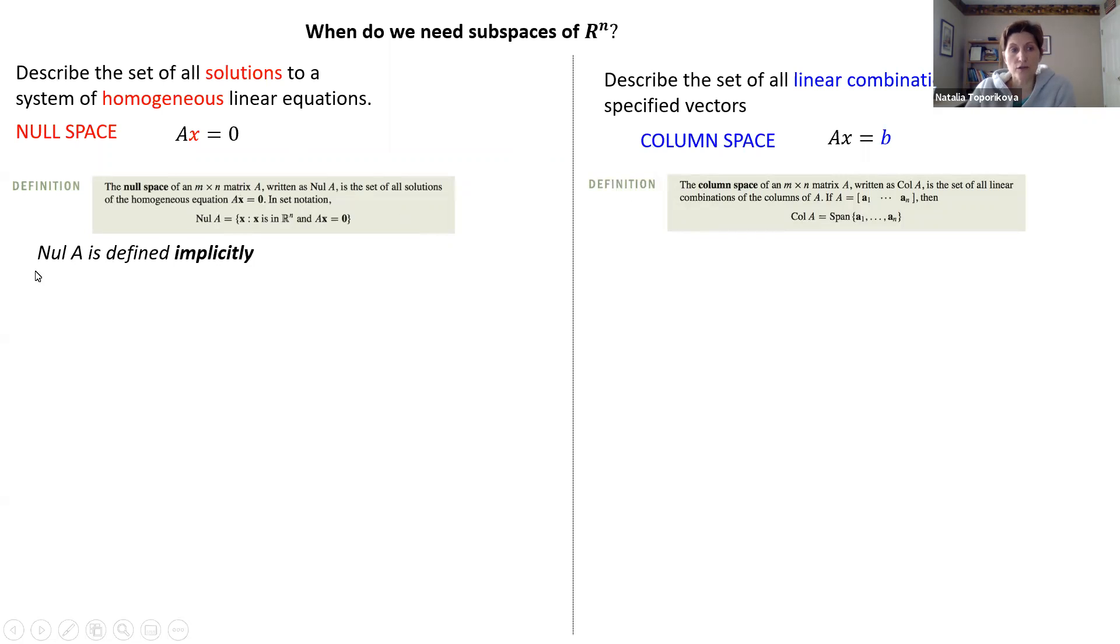For example, null space is, we say, defined implicitly. This is a solution of matrix equation, which we never know a priori. We have to solve the equation to find it.